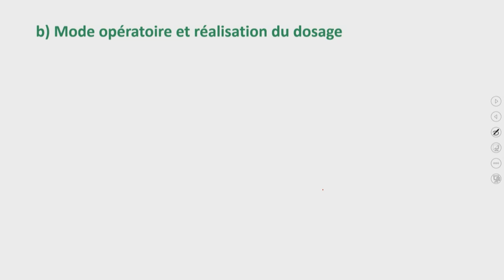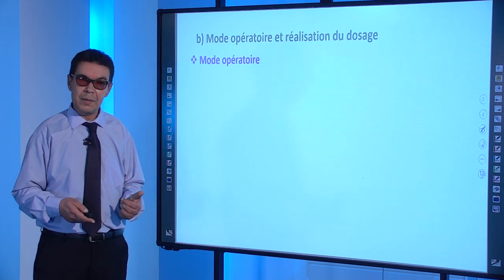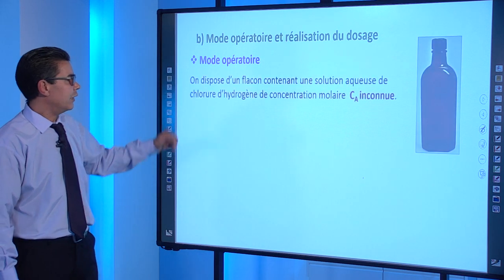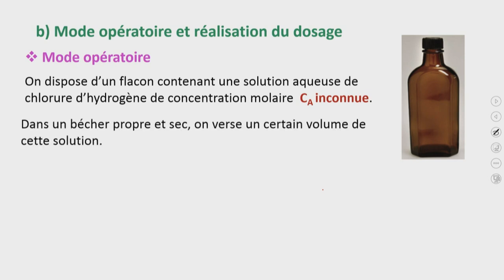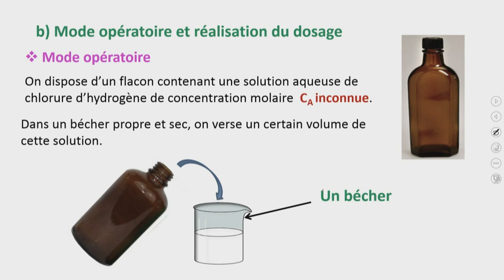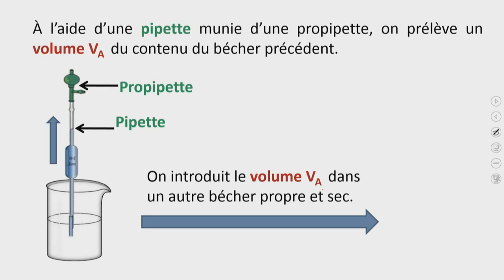Passons au mode opératoire et à la réalisation du montage. Soit à doser un certain volume Va d'une solution d'acide chlorhydrique de concentration inconnue par une solution d'hydroxyde de sodium NaOH de concentration Cb connue. On dispose d'un flacon contenant une solution aqueuse de chlorure d'hydrogène de concentration molaire Ca inconnue. Dans un bécher propre et sec, on verse un certain volume de cette solution. Puis, à l'aide d'une pipette munie d'une pro-pipette, on prélève un volume Va du contenu du bécher, que l'on introduit dans un autre bécher propre et sec.